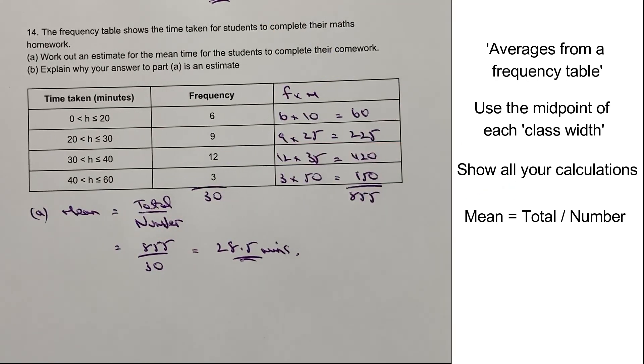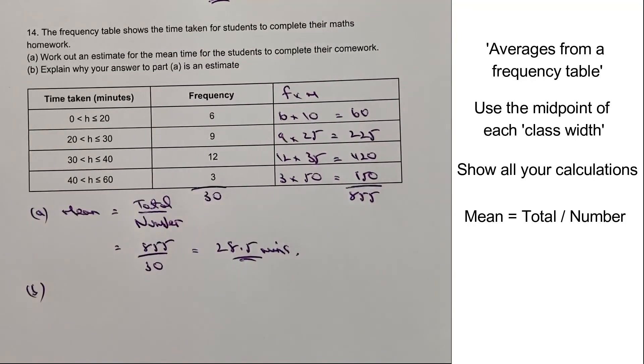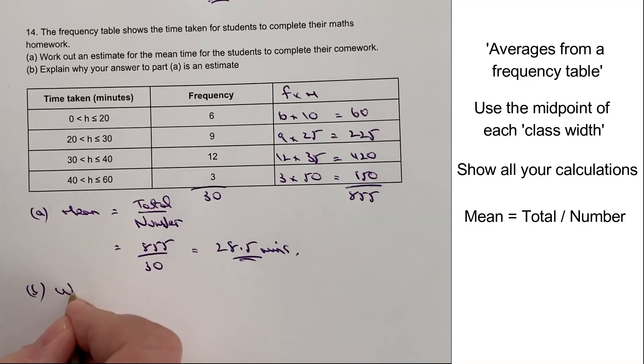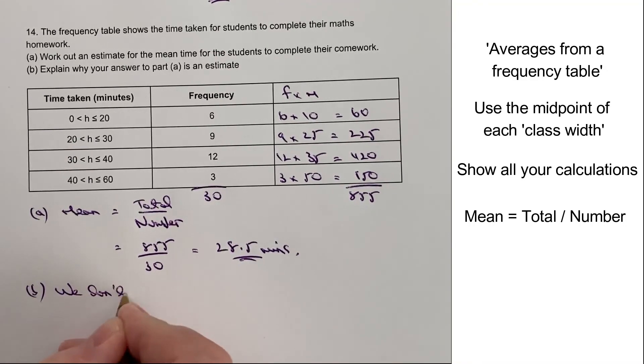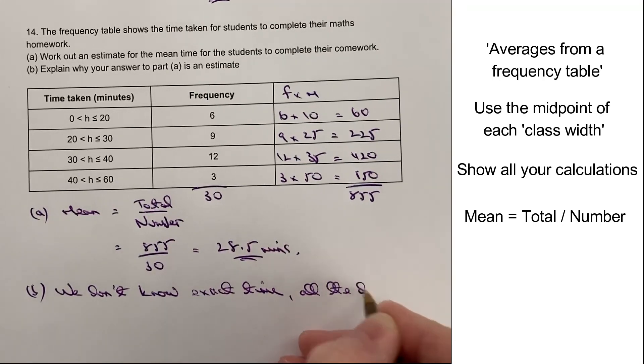All right. So let's have a look at B then. It says, explain why it's an estimate. Well, as I mentioned before, it's an estimate because we don't know the exact time of every single student because all of the data is grouped. So if I write in here, we don't know the exact time, all the data is grouped.